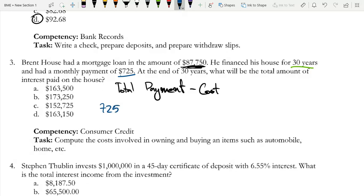To calculate total payment, we can do 725. Now there are 12 months per year, so times 12, and then we would have to do all of this times 30. If I take up my calculator, 725 times 12 is 8,700, which now times 30 is 261,000. So our total payment is $261,000 and the cost is $87,750, so I subtract and I'm left with $173,250.